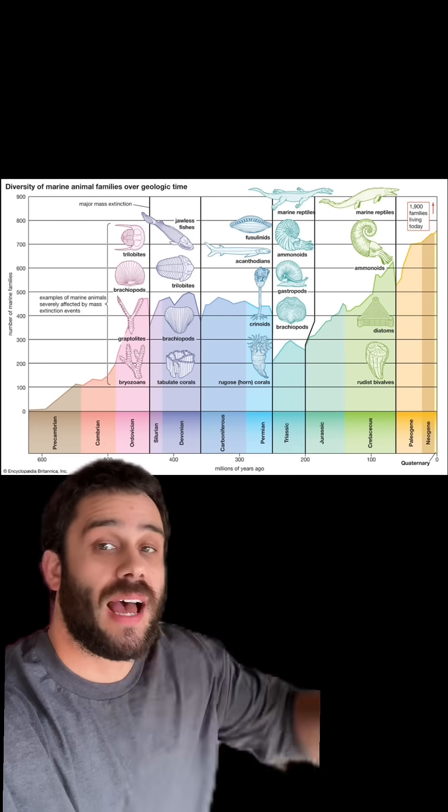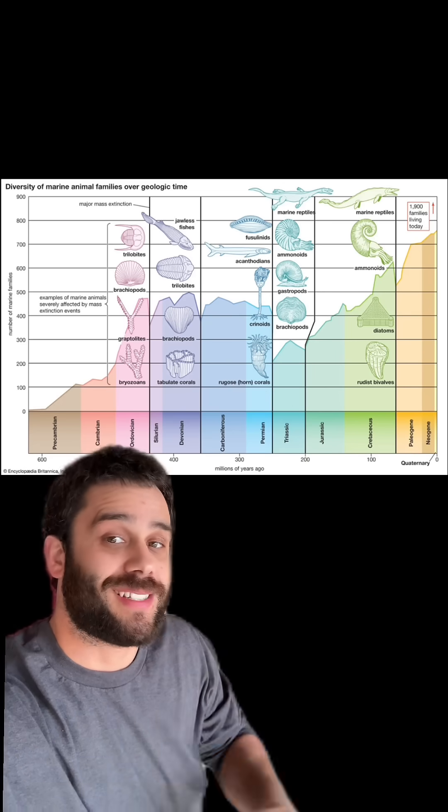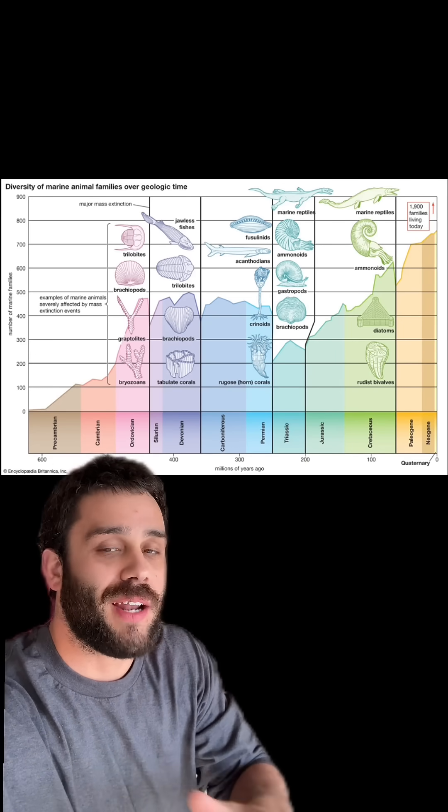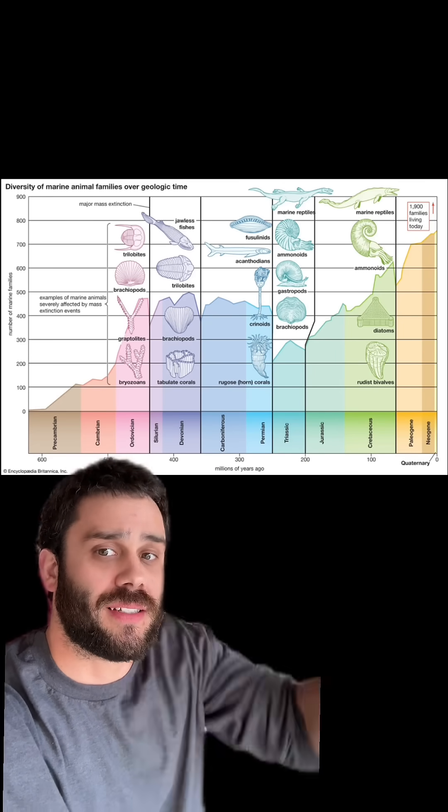This shows animal diversity over time. It's used to demonstrate mass extinctions a lot of the time, but it always starts out right around the Precambrian, right around 600 million years ago.